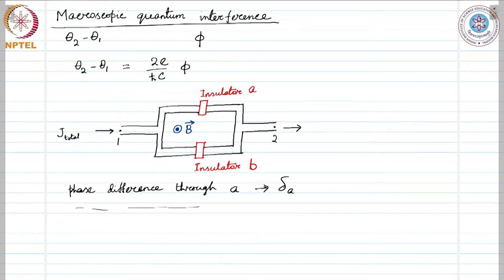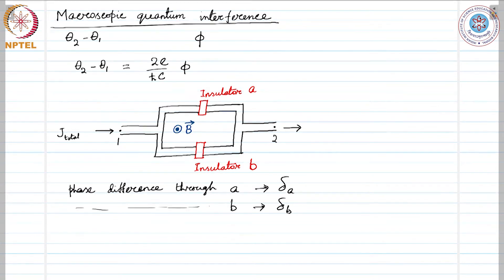This is the situation of interference: no voltage is applied but there is a magnetic field. Let the phase difference between point 1 and 2 taken on a path through junction a be δ_a, and through b be δ_b. If there is no magnetic field, these phases must be equal. But if a magnetic flux φ passes through the interior of the circuit, then δ_b − δ_a = 2e·φ/(ℏ·c).